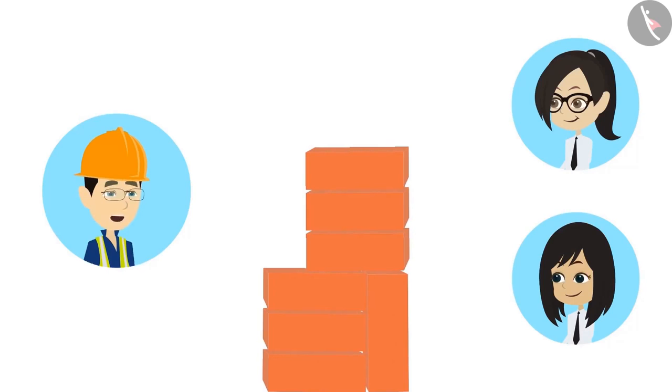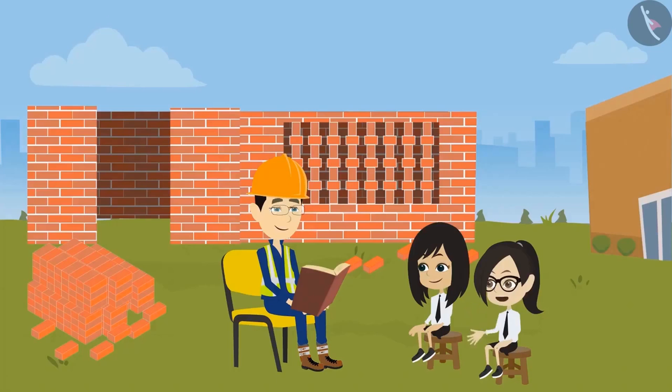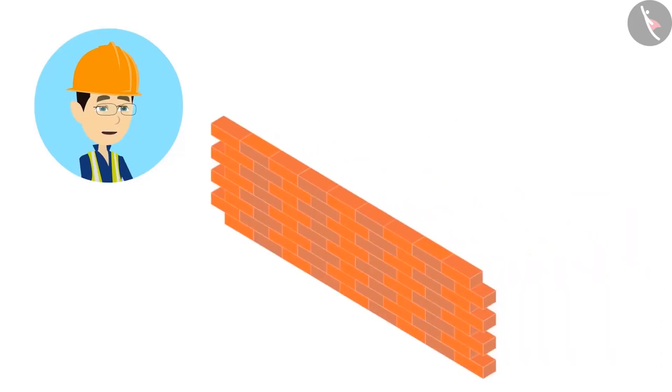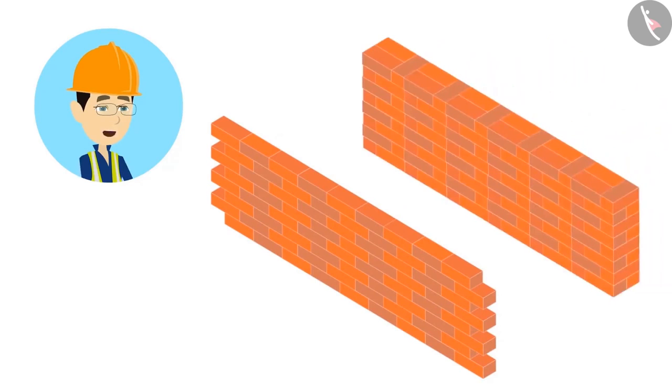Sir, now show the pattern of walls. Sure. See, I'll show you two patterns of walls. This is the first pattern. It is made when we have to make a thin wall. And this is the second pattern. It is made when we have to make the wall a bit thick.